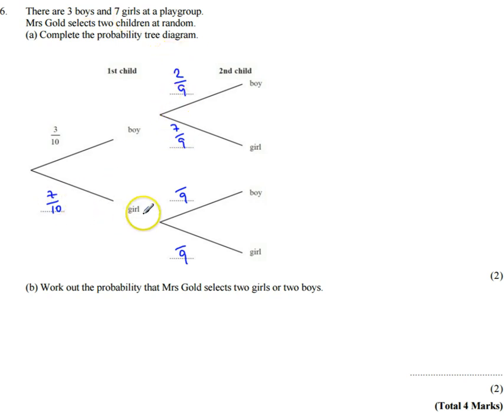However, if she picked a girl first, then there's going to still be three boys left, but now there's going to be six girls left. So that's going to be three ninths for boy, because there's three boys left, and six ninths for girl, because now there's six girls left.